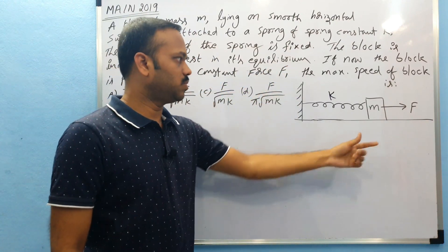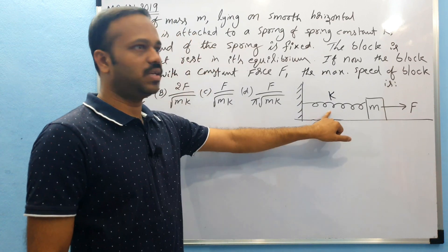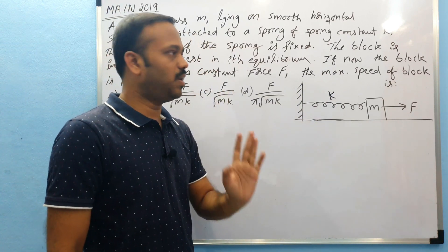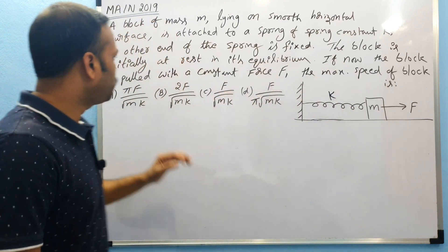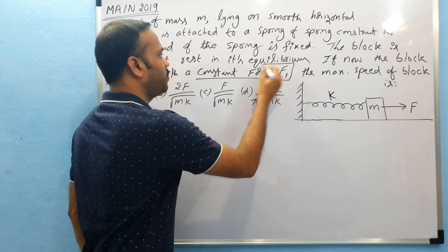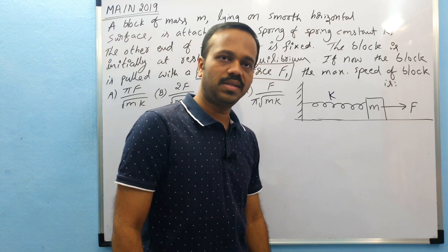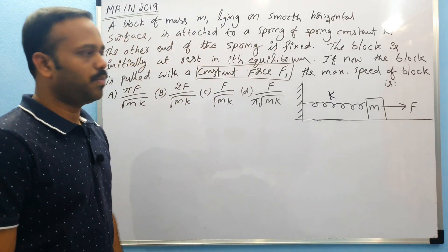So the block is at rest initially at its equilibrium position, that means the spring is in its natural length. Then if now the block is pulled with a constant force F - so this term is important, constant force F - then we need to find what is the maximum speed of the block.